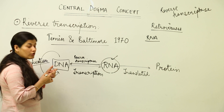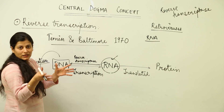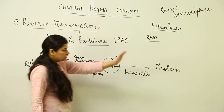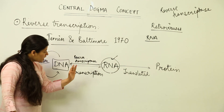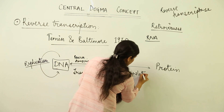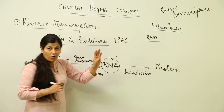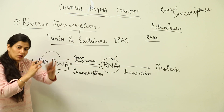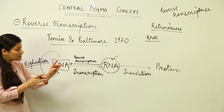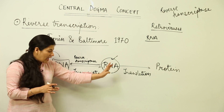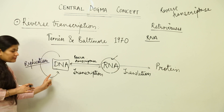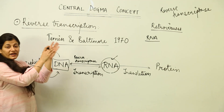To repeat: the central dogma dealt with the unidirectional flow of information from DNA to protein, involving two major processes — transcription and translation. These two processes are observed in all organisms. But certain retroviruses and tumor-causing viruses have RNA as their genetic material, and RNA does not have the self-replicating property — it is DNA which has self-replication.